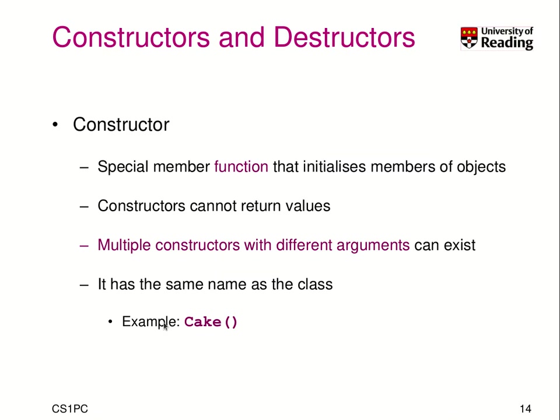You cannot return anything from a constructor because it, in fact, returns the object basically. And you can have many constructors with different arguments to create different types of objects, varying the content of the object with useful presets or defaults.